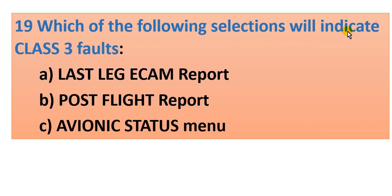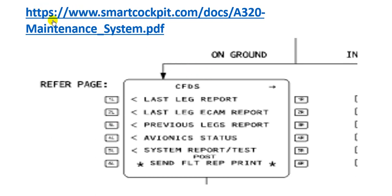This is the first question: which of the following selections will indicate Class 3 faults? We want to search about Class 3 faults. The options are: last leg ACARS reports, post-flight reports, or avionics status menu. I will search about Class 3 in these reports using this PDF file which helped me find the answer.